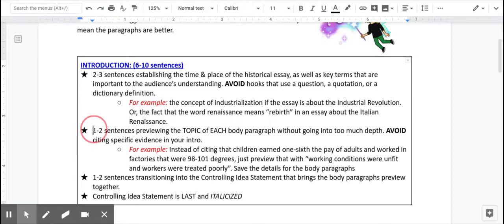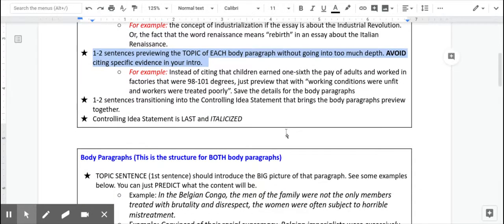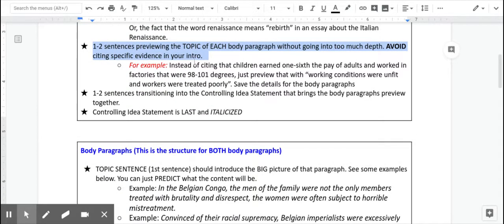Then you want to take about one to two sentences previewing the topic of each body paragraph and don't go into too much depth just yet. You shouldn't be citing any specific facts and figures in your intro. You want to save those for the body paragraphs because that's where they belong. And if you cited them in the intro, then your paper is going to feel really repetitive and we don't want to have repetitive papers.